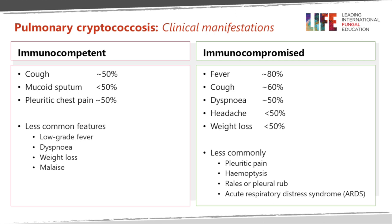The pulmonary presentations vary between immunocompetent and immunocompromised patients. In immunocompetent patients you get cough, production of sputum in some patients, and sometimes pleuritic chest pain, and then occasionally low-grade fever, shortness of breath, weight loss, and malaise. This is not a very distinctive clinical presentation, nor is the radiology, so it's often quite a difficult diagnosis, and because it's uncommon it's often missed.